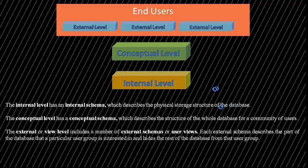The third level is the external or view level, which includes a number of external schemas or user views. Each external schema describes the part of the database that a particular user or user group is interested in, and hides the rest of the database from that user group. A high-level data model or an implementation data model can be used at this level.